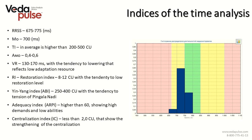In the time analysis tab, the average duration of the heart cycle index will be in the range of 675 to 775 ms, with a mode of 700 ms. Attention index in average is above 200 up to 500 conventional units. Mode amplitude is 0.4 to 0.6. Restoration index has a tendency to decrease, at 8 to 12 conventional units. Yin index is 250 to 400 conventional units, showing tension of Pingala Nadi. Adequacy index is higher than 60 conventional units, telling us the body requires increased metabolic resources with limited capacity. Centralization index is below 2 conventional units.